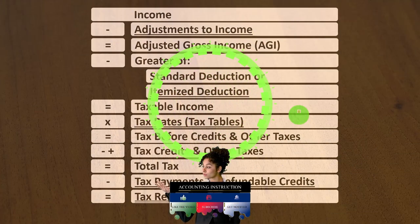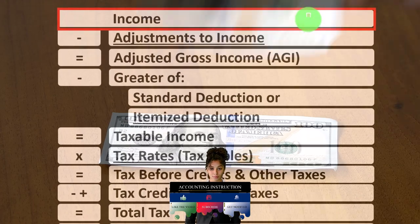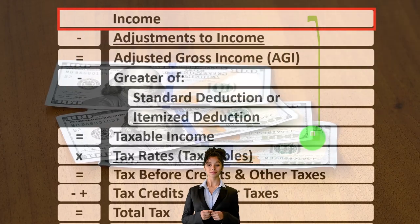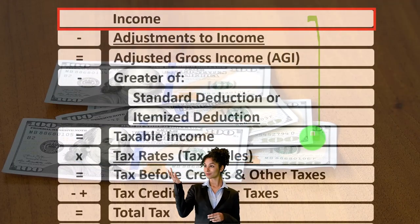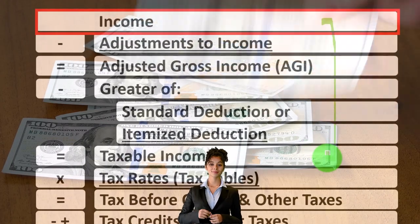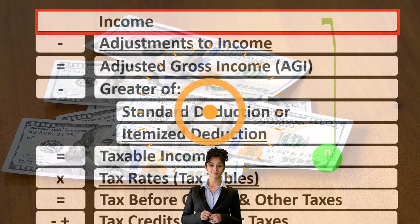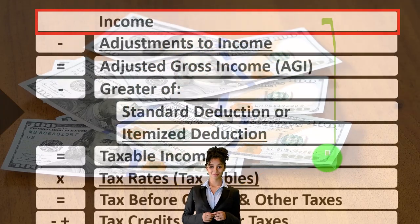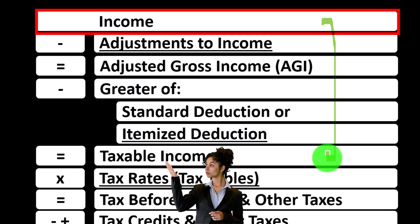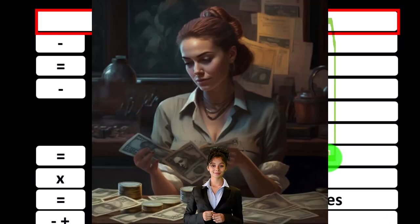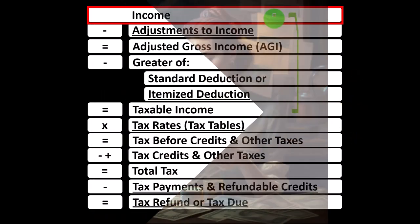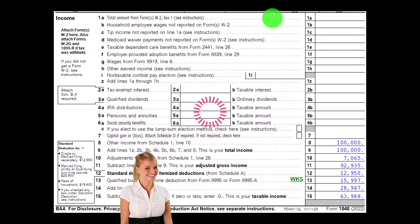Looking at the income tax formula, we're focused on Line 1 Income. The first half of the income tax formula is in essence an income statement — just an outline with other forms and schedules flowing into it — the Schedule C, Small Business Income, which is in essence an income statement in and of itself. Income minus expenses, the net income then flowing into the income line of the income tax formula.